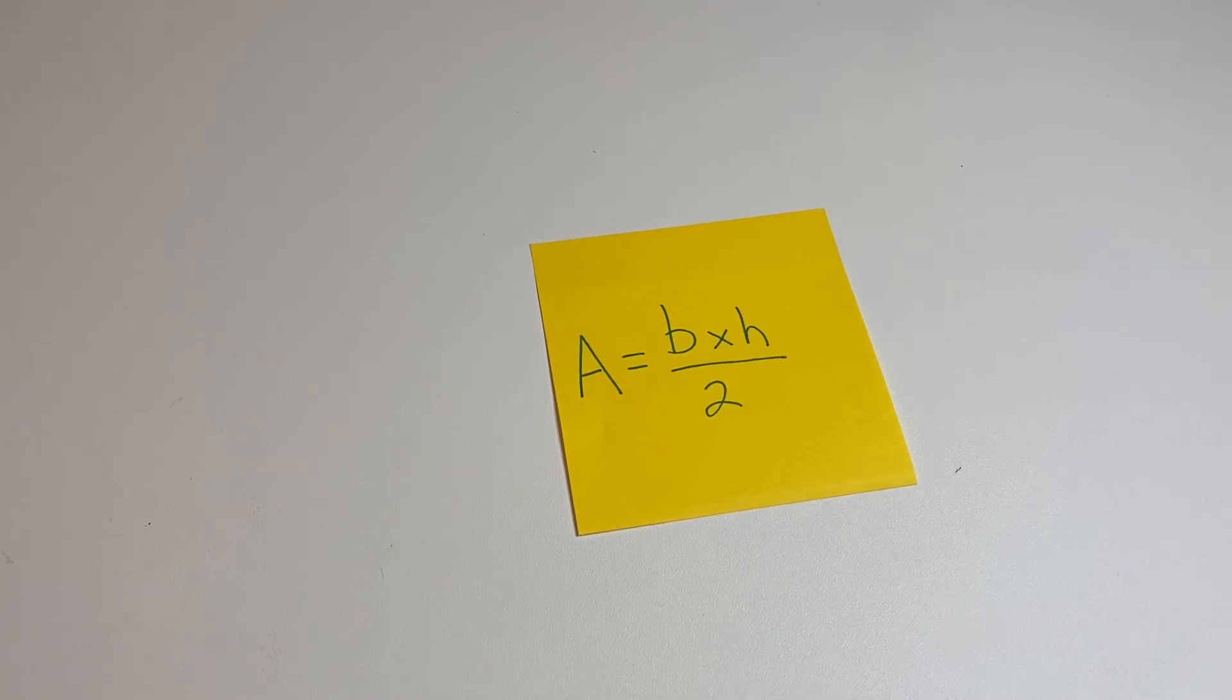So for triangles, the formula we're going to use is area equals base times height divided by two. Now you'll see a lot where it says area equals one half base times height, which is true, it is one half of it. But as far as calculating goes, it's a lot easier in most people's minds to divide by two than to multiply by one half. So we're going to stick with dividing by two.